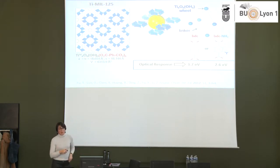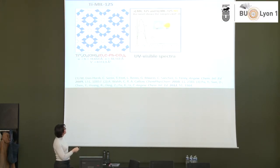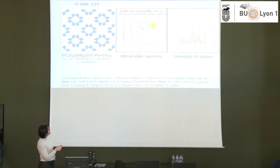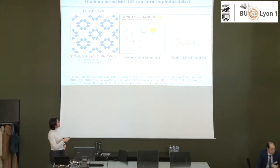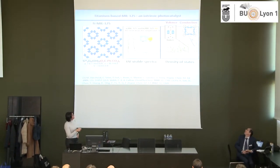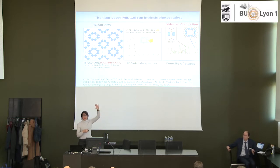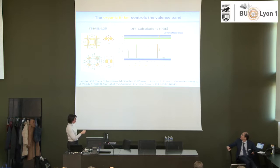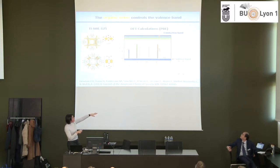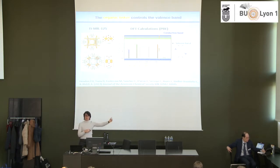We performed density functional theory calculations to understand why this happens. The amino group induces a new absorption band in the visible, making the material yellow — this is due to electron transfer from the linker to the titania. By introducing amino groups, you add intermediate energy levels that reduce the band gap. The valence band is driven by the organic linker and the conduction band by the titania. Adding one amino group pushes the valence band up, reducing the band gap by more than 1 eV; a second amino group pushes it even further into the visible.